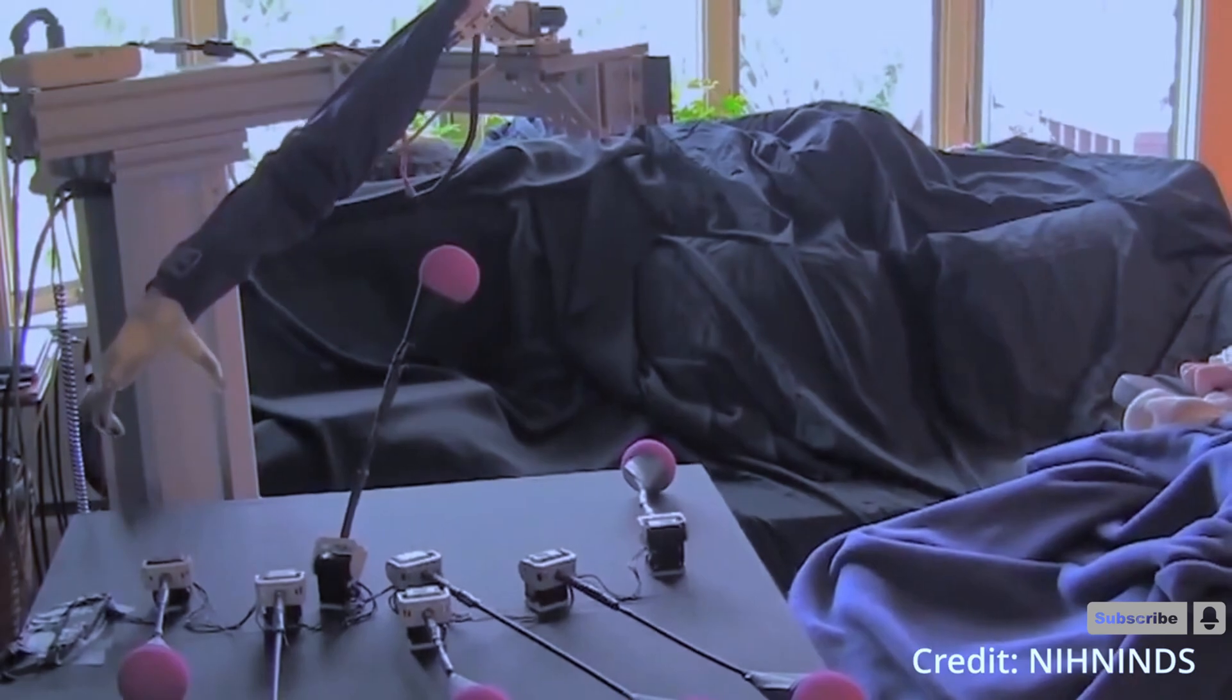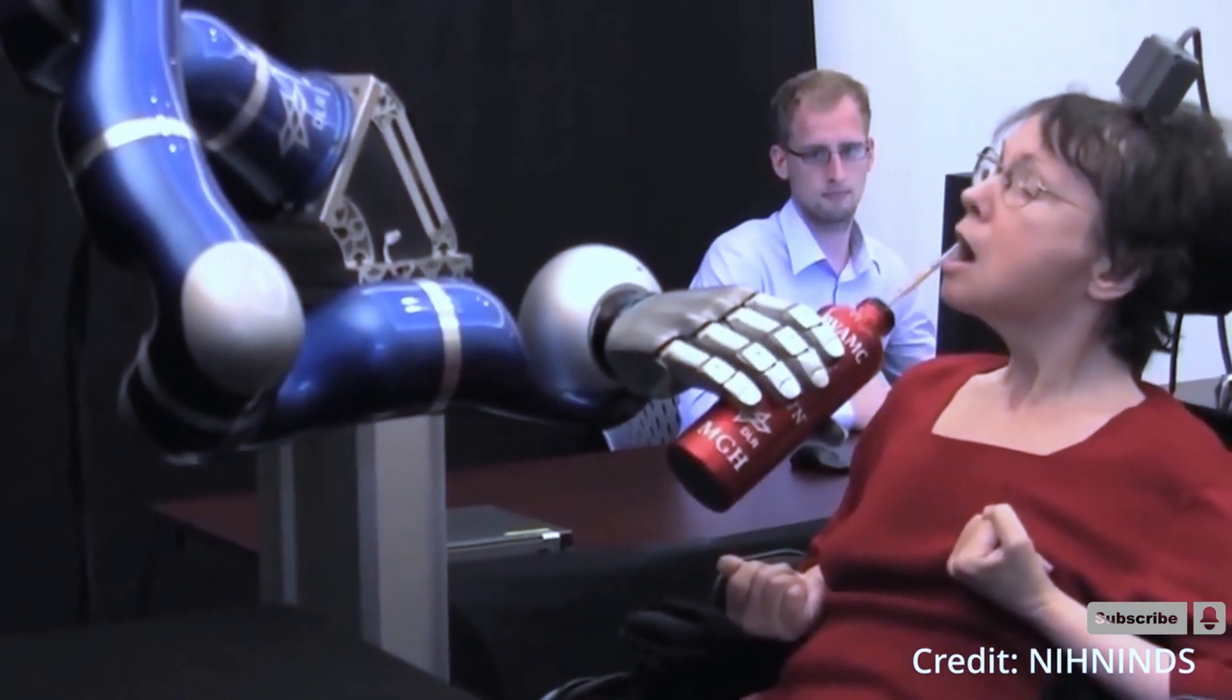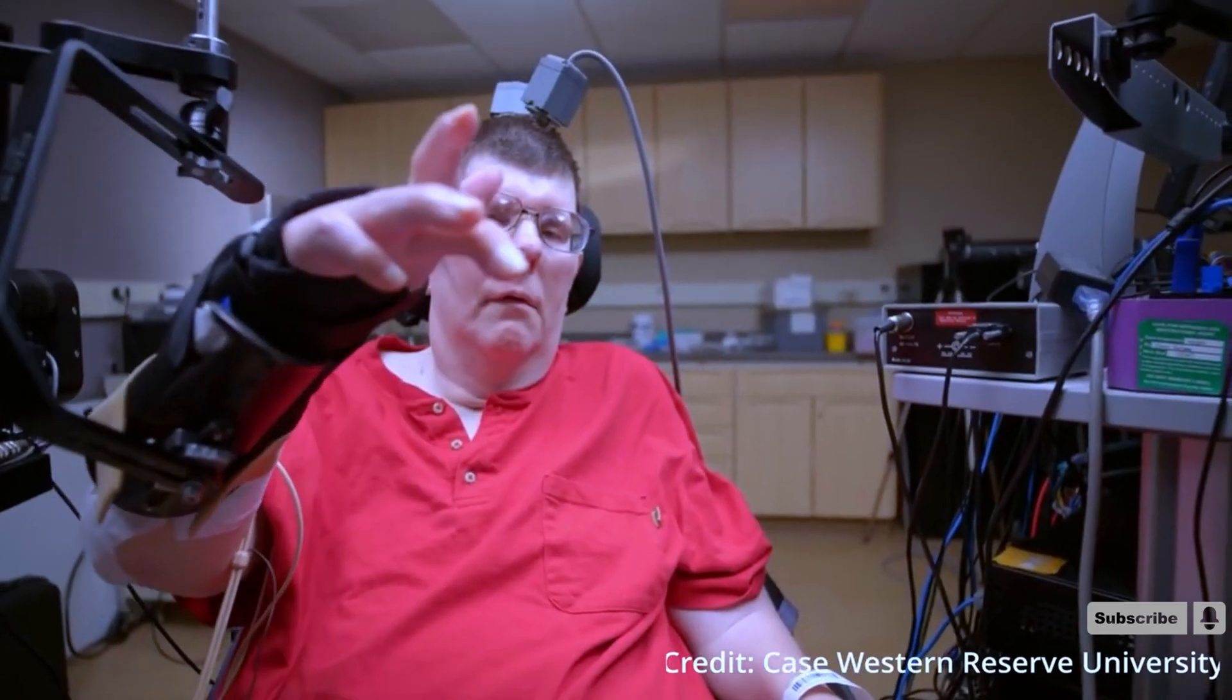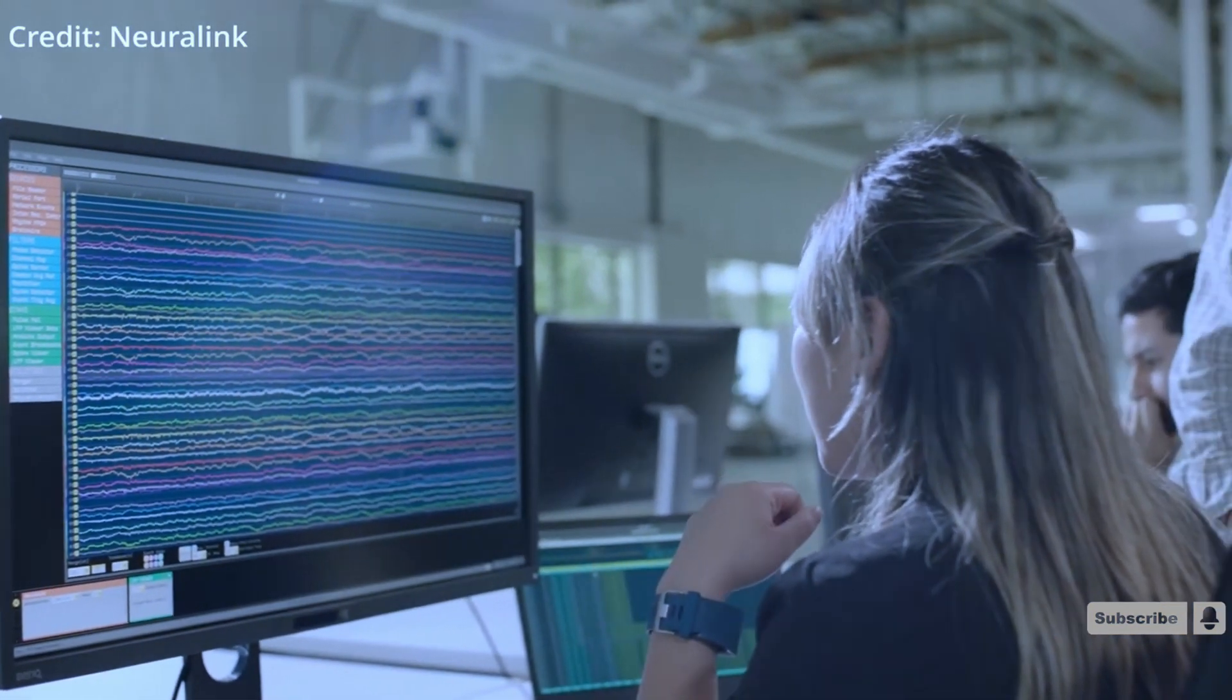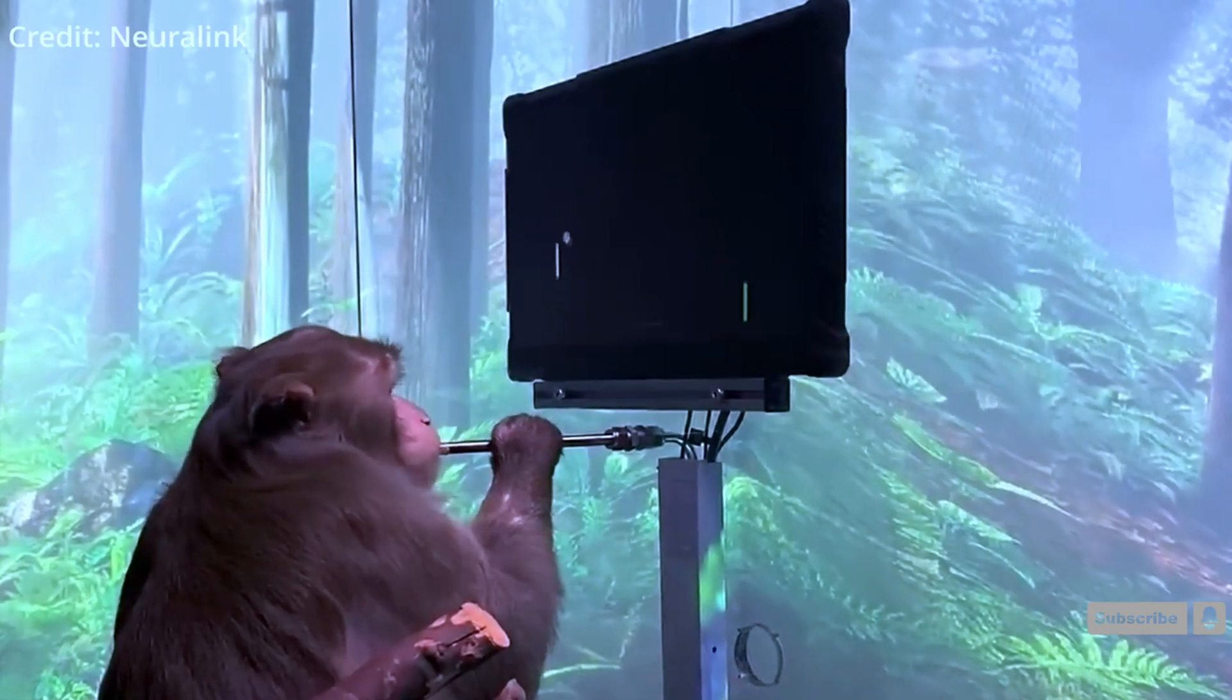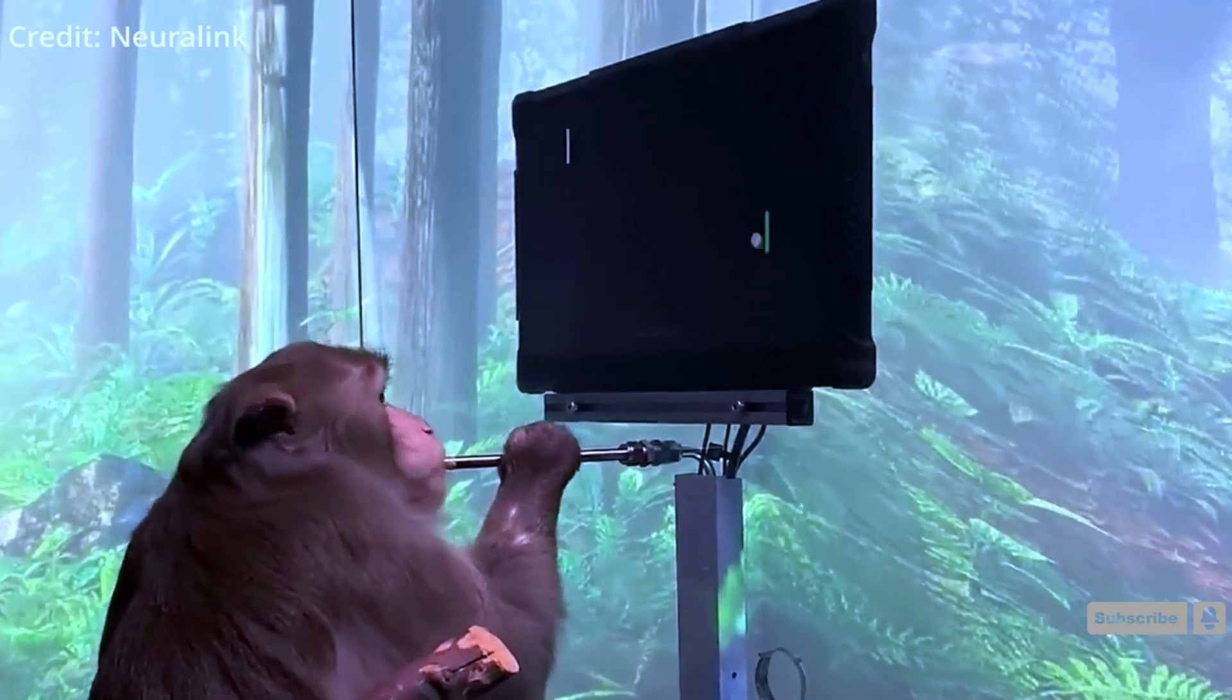When Neuralink first launched in 2016, it immediately caught the attention of Silicon Valley venture capitalists and transhumanists alike. However, Neuralink has yet to receive FDA approval to test its device on humans. Instead, Neuralink's most significant scientific discoveries have come from testing on macaque monkeys, a method that some animal rights organizations claim is too cruel and unusual to continue.